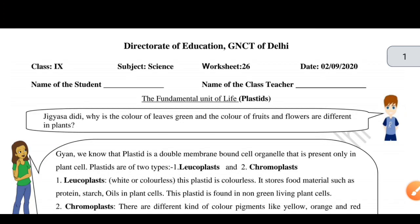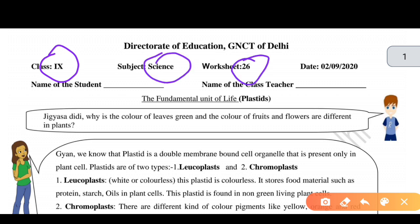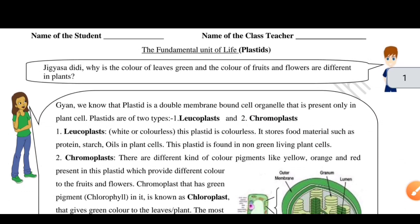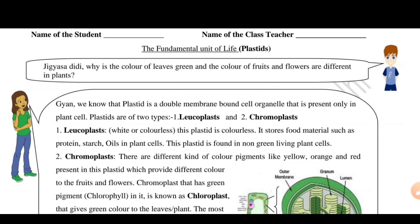Hello students, welcome to my YouTube channel. Today we are going to discuss class 9 science worksheet number 26, which is your 2nd September worksheet. We are going to study the fundamental unit of life — cell. The next part is plastids, and that is today's topic. It is a very interesting topic.